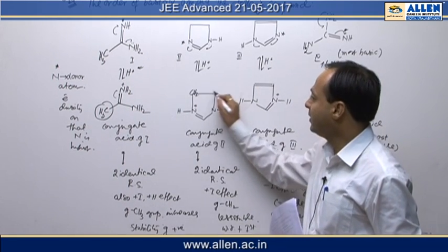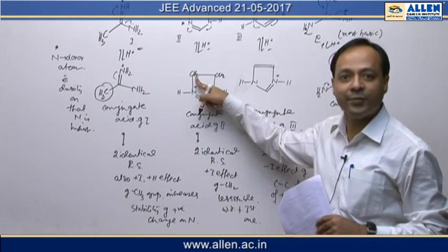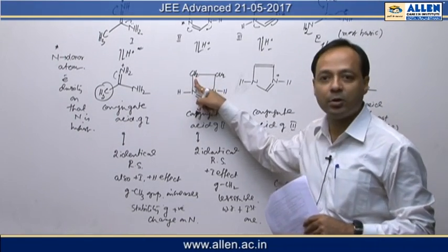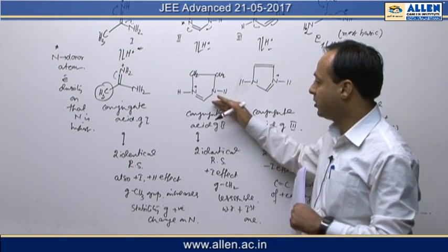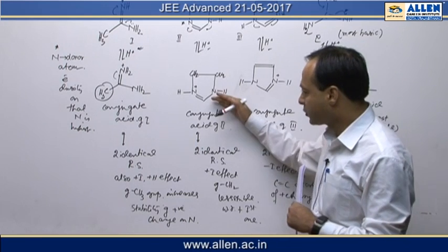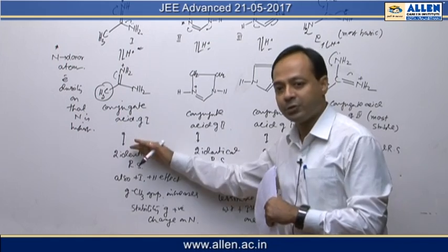Here, what happened here, CH2 group is present and CH2 group, there is some plus I effect, but its hyperconjugation is very low. So this does not undergo hyperconjugation and its conjugate acid stability is less as compared to first one.